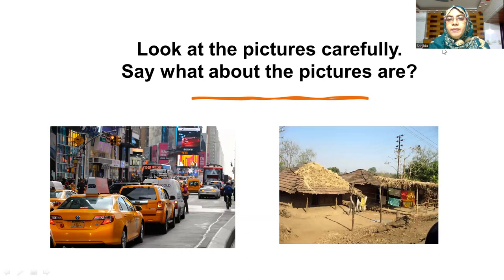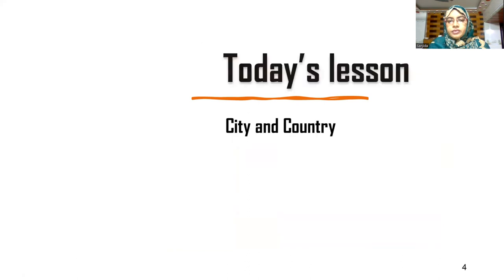Look at the pictures carefully. Say, what are the pictures about? We can see two pictures, and they are about the city and the countryside.